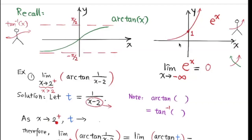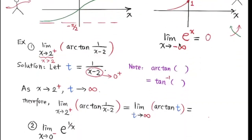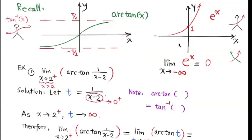As x approaches 2 from the right, x is greater than 2, so x − 2 approaches 0 but stays positive. The denominator goes to 0 but stays positive, so 1 over that goes to positive infinity. So t goes to positive infinity as x approaches 2 from the right. We replace 1/(x−2) by t and take the limit as t → ∞ of arctan(t). From the graph, as t → ∞, arctan(t) → π/2. So this limit equals π/2.